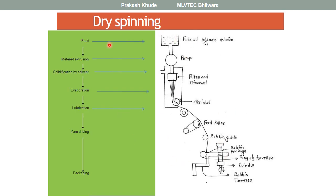This is the generalized process of dry spinning systems. Initially, the filtered polymer solution, normally called the dope solution, is prepared where the polymer is dissolved with the help of a solvent. This is then pumped through a metering pump, similar to melt spinning systems, which regulates the flow rate, and then it passes through the spin pack assembly comprising a filter and spinneret.